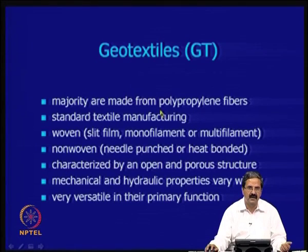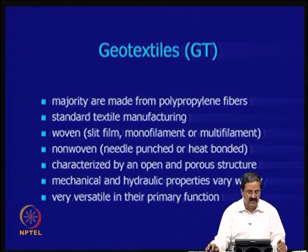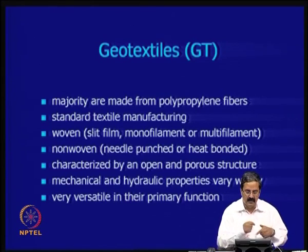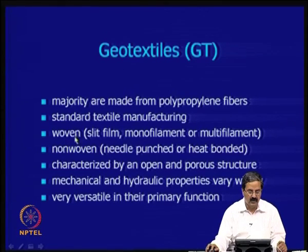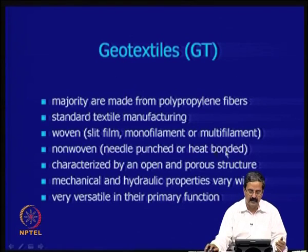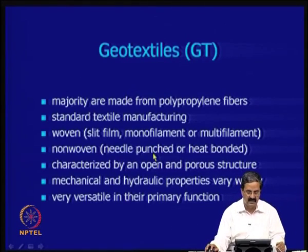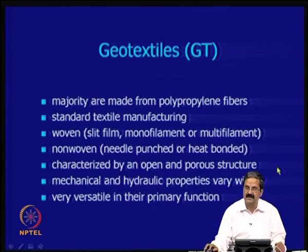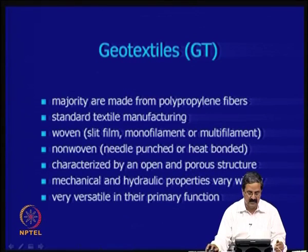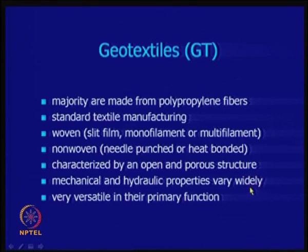Many companies have fiber-making processes. You can have woven types — woven together as a slit film, monofilament, or multifilament (single or multiple filaments). Instead of weaving, you can have non-woven types, where heat bonding is used to combine the material. They can also be needle-punched to stitch them together. Some of these materials are characterized by an open and porous structure, because geotextiles are most often used for permeability and separation.